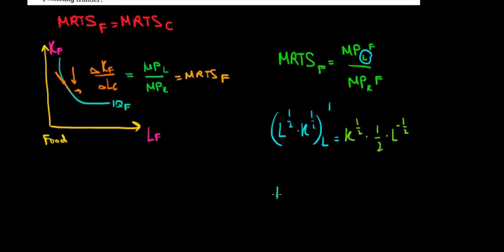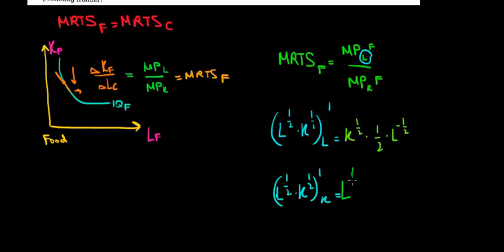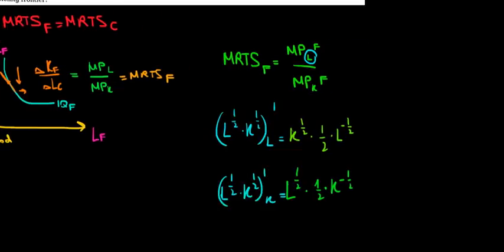Now the marginal productivity with respect to capital: differentiating L^(1/2) times K^(1/2) with respect to capital. Labor is now the constant, so we get L to the power 1/2 times 1/2 times K to the power minus 1/2. We now have both marginal productivities and can use them to find the MRTS for food production.